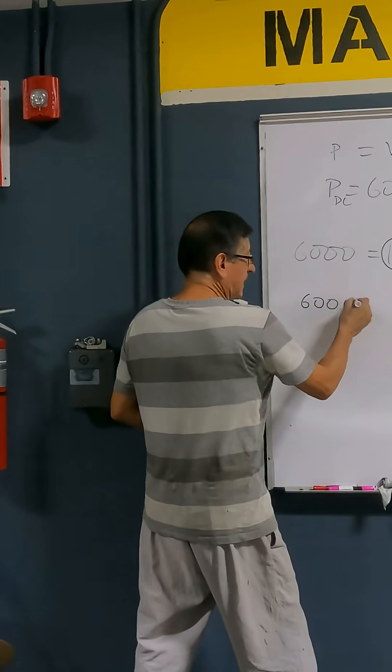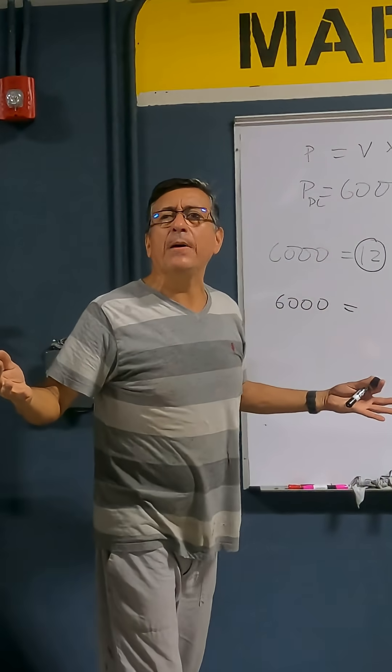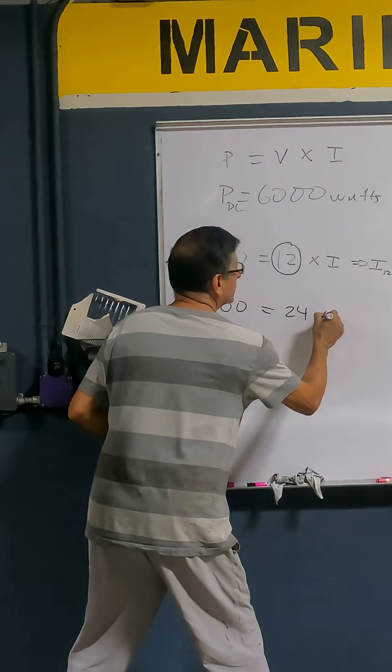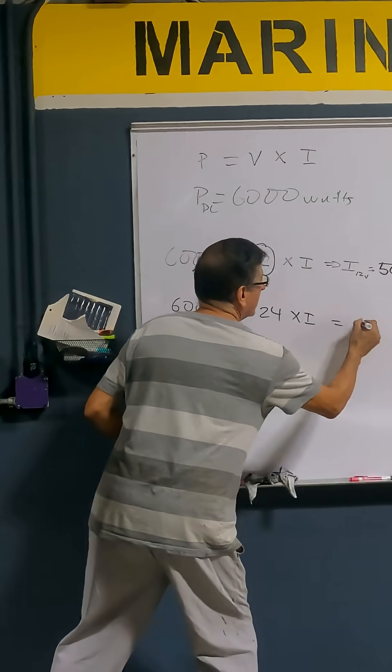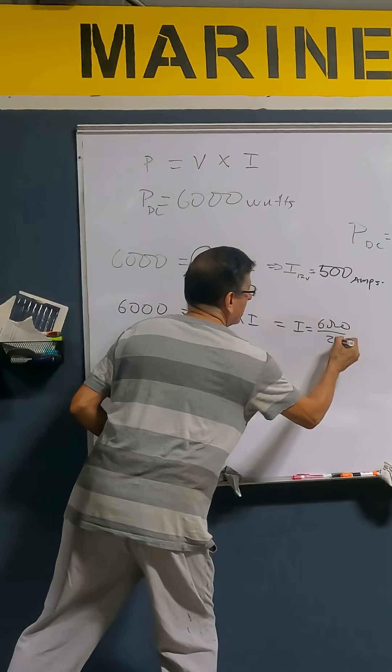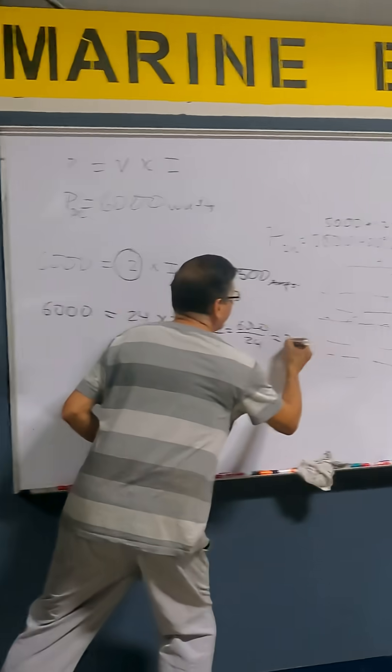Suppose that I am going to obtain 6,000 watts. That's the power, but with 24 volts. 24 volts times the intensity. Then intensity is 6,000 divided by 24. How much is that? 250 amps.